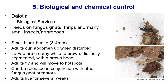Dalotia is a small rove beetle of about three to four millimetres that feeds on similar things to the predatory mites and can be used in conjunction with them. The key difference is that adults can fly, so they move around more — but are also a little more susceptible to pesticides. Dalotia larvae are distinctly segmented, have legs, and a brown head, helping distinguish them from fungus gnat larvae which are mostly white with a black head and no legs.